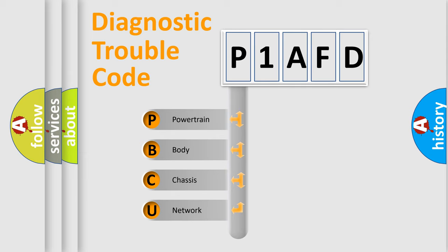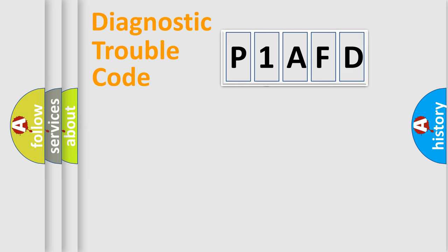We divide the electric system of automobile into four basic units: Powertrain, Body, Chassis, and Network. This distribution is defined in the first character code.